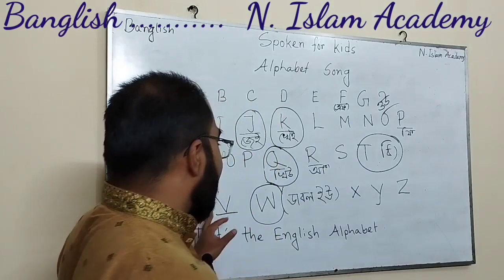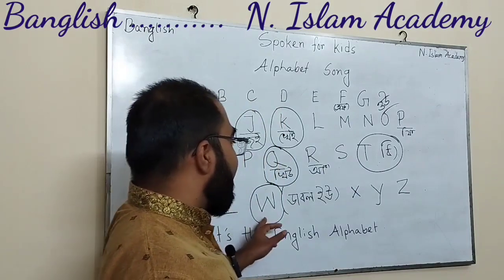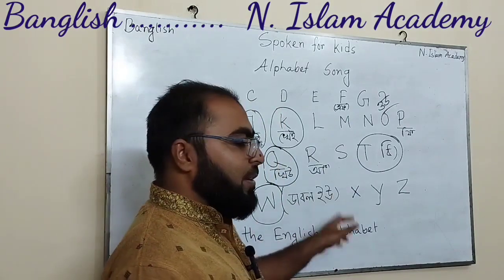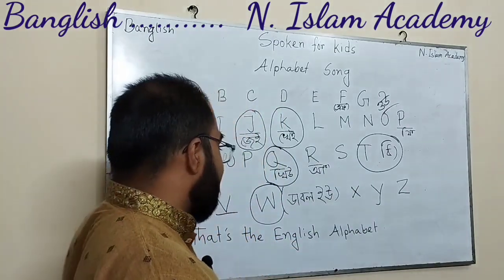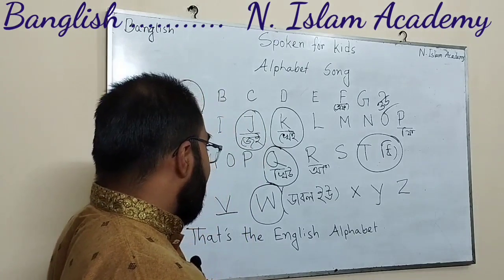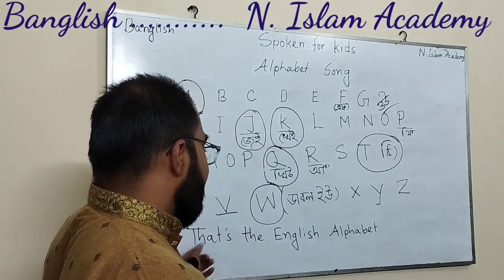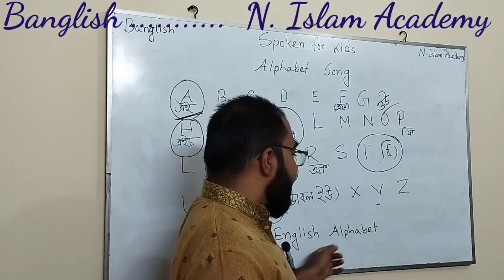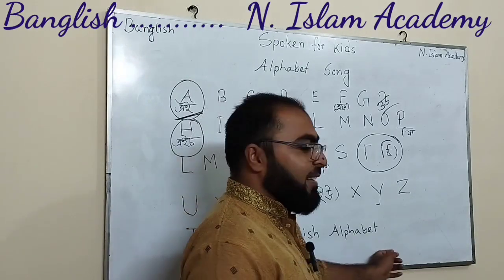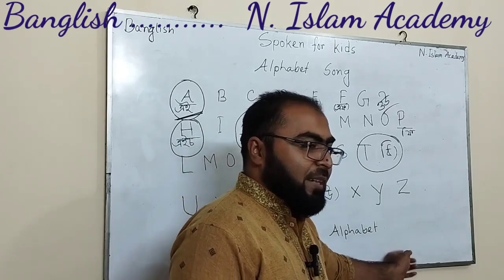U, V, W, X, Y, Z. That's the English alphabet.